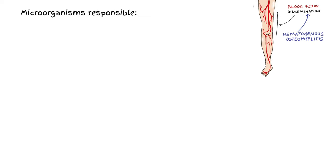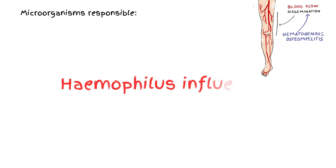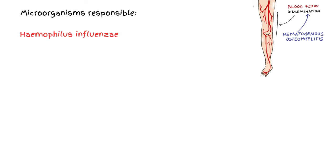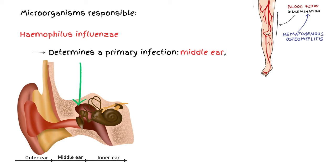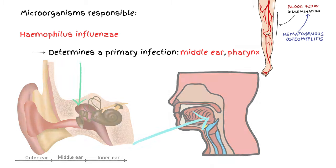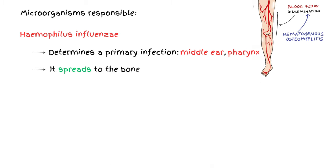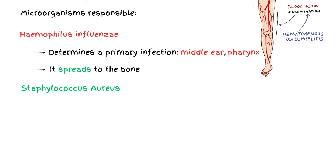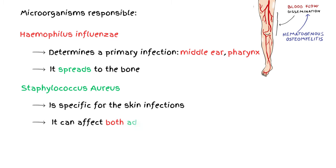The microorganisms responsible for osteomyelitis are Haemophilus influenzae, which determines a primary infection of the middle ear or the pharynx, from where it can spread to the bone; and Staphylococcus aureus, which is specific for skin infections. Staphylococcus aureus is not typical for any age group — it can affect both adults and kids.